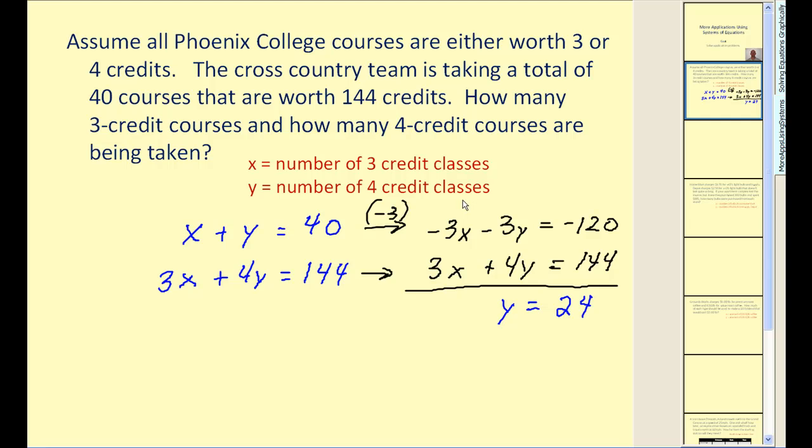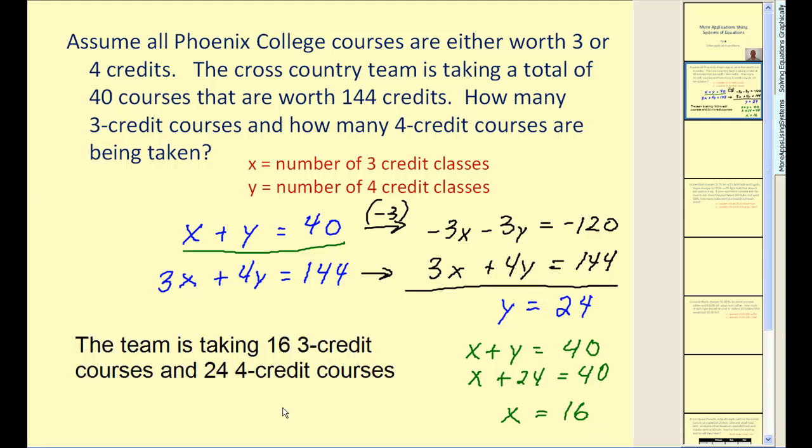Therefore we know the team is taking 24 four credit courses. But we have to perform substitution into one of these original equations in order to find x. It seems like it'd be pretty easy to use this first equation to solve for x. Since we know y is 24, we can solve this for x, x equals 16. Therefore we can conclude the team is taking 16 three credit courses since x equals 16 and 24 four credit courses since y is equal to 24.